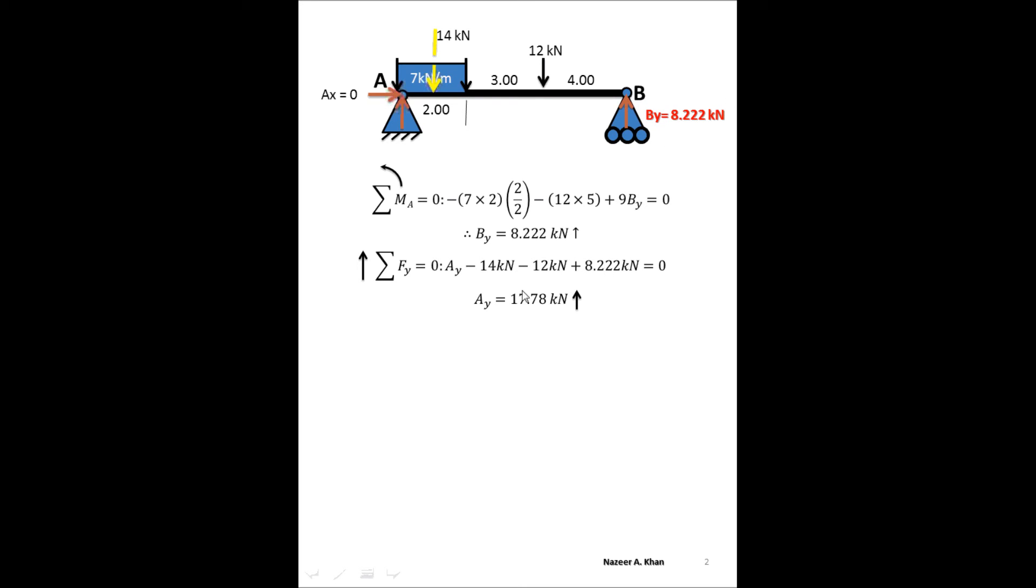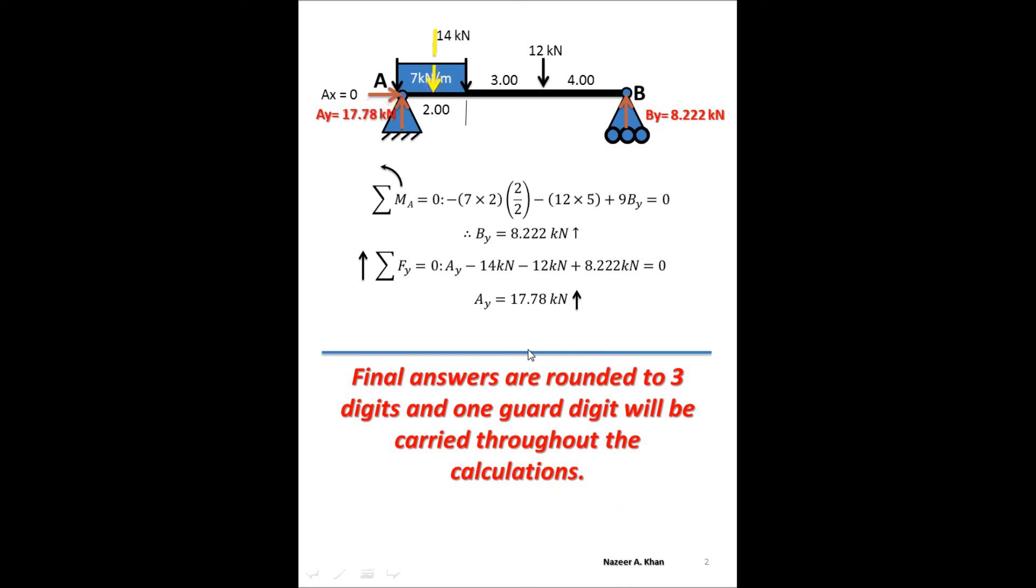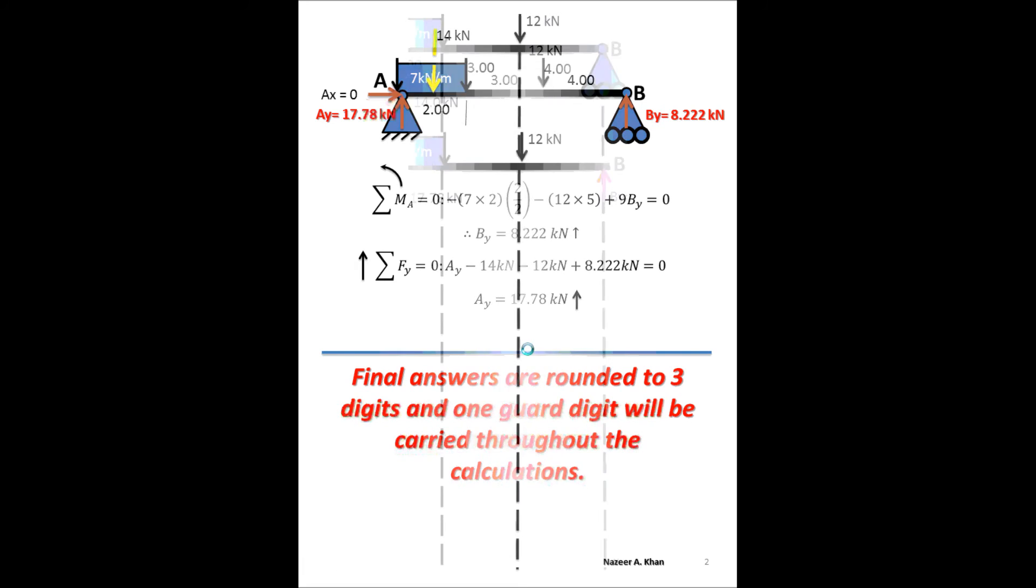Crunch the numbers. You have 17.78 kN acting up. So now we have all of our magnitudes that we need for FBD. Again, my final answer I'll round off to three significant digits. The other answers, I'm going to carry a guard digit.